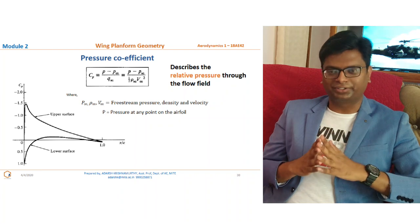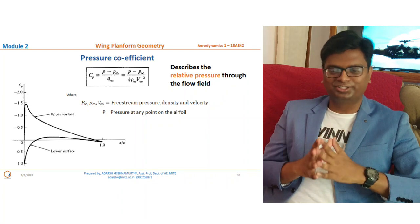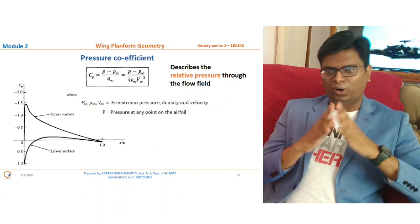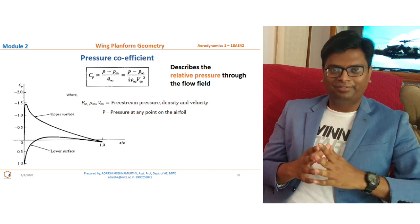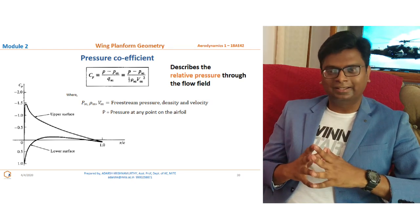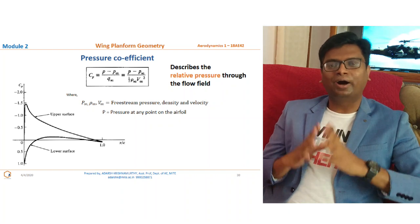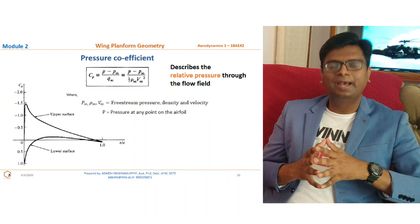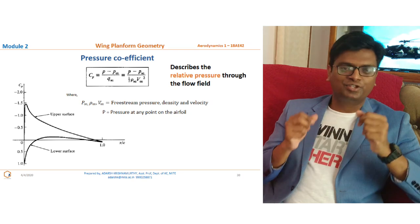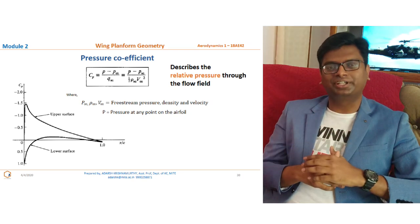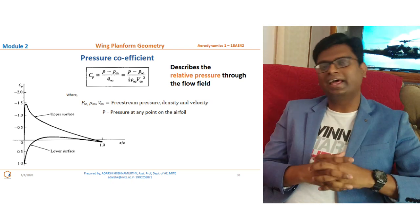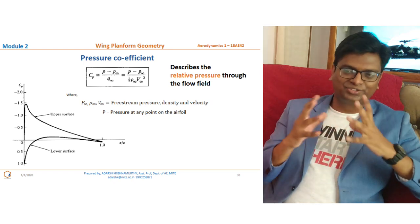The dynamic pressure is the familiar ½ρV², where ρ∞ is the free stream air density and V∞ is the free stream velocity. In the numerator, p is the local pressure at any point on the airfoil surface, and p∞ is the free stream pressure. In other words, the pressure coefficient relates the local pressure to the free stream pressure with respect to the dynamic pressure.